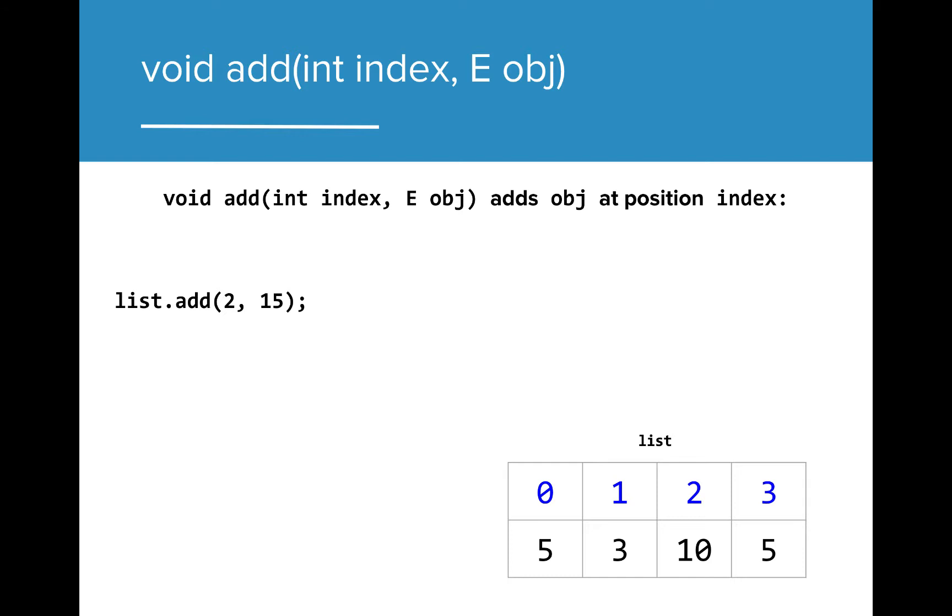We can also add values to ArrayLists at a particular index. The Add method is overloaded to also accept the index at which we would like to add that particular value. In this example, we would like to add the value 15 to the index position 2. When the value is added to the list, the values at index 2 and higher are then shifted up one index. The previous index 2, which held a value of 10, is now found at index 3, and the value 5 is now found at index 4.